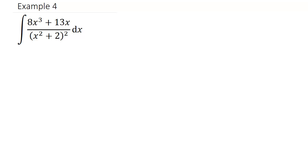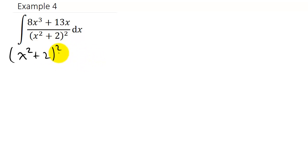The first thing I want to do is factor the denominator. But as you can see, x squared plus 2 squared doesn't factor. So now we can go ahead and write the partial fractions.